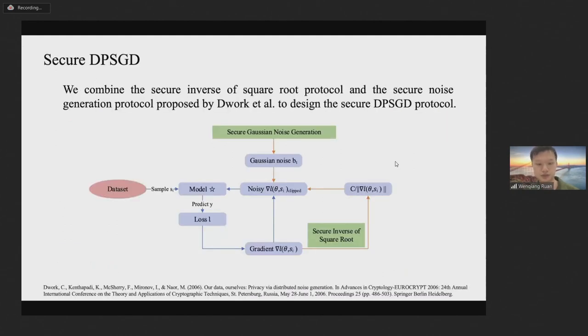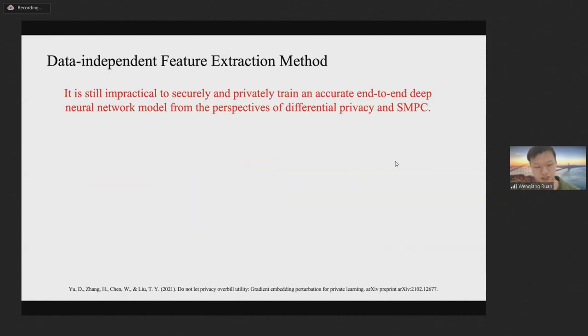For the generation of Gaussian random noise, we directly use a secure noise generation protocol proposed by Dörner and others. Combining our proposed secure inverse of square root protocol with the secure noise generation protocol, we can extend the existing secure SGD protocols as secure DPSGD protocols. Next, I will present our optimization methods. I first show that it is still impractical to securely and privately train accurate end-to-end deep neural network models from the perspective of differential privacy and SMPC.